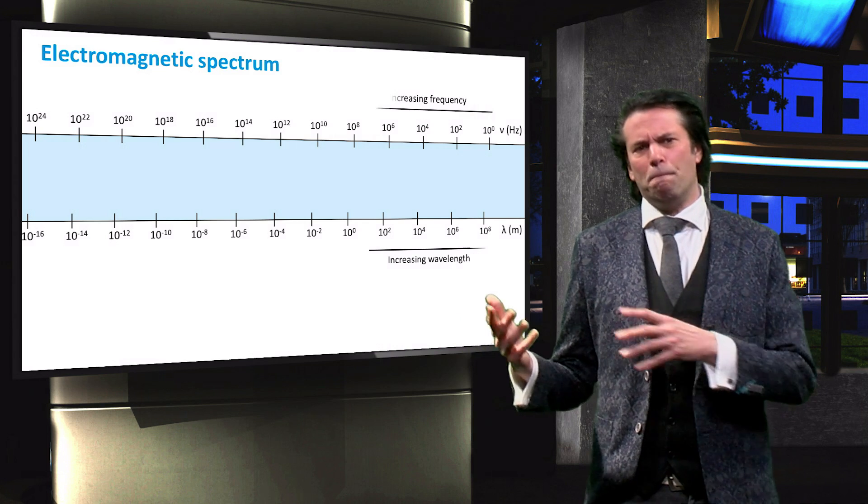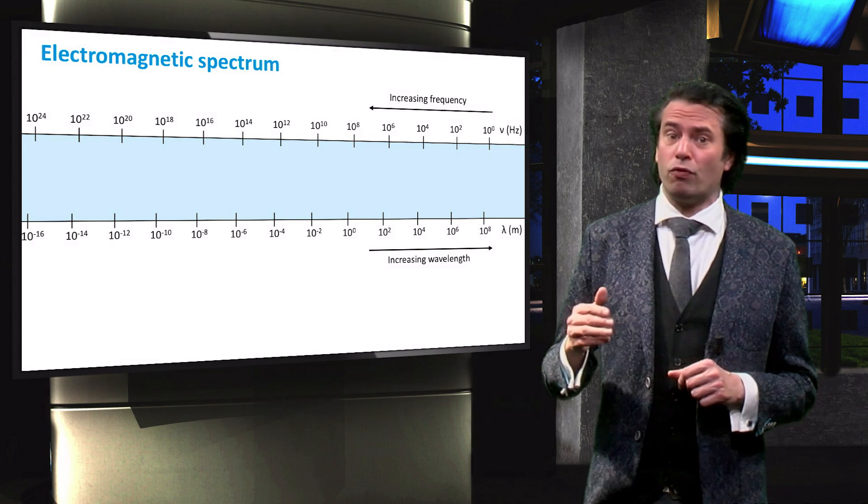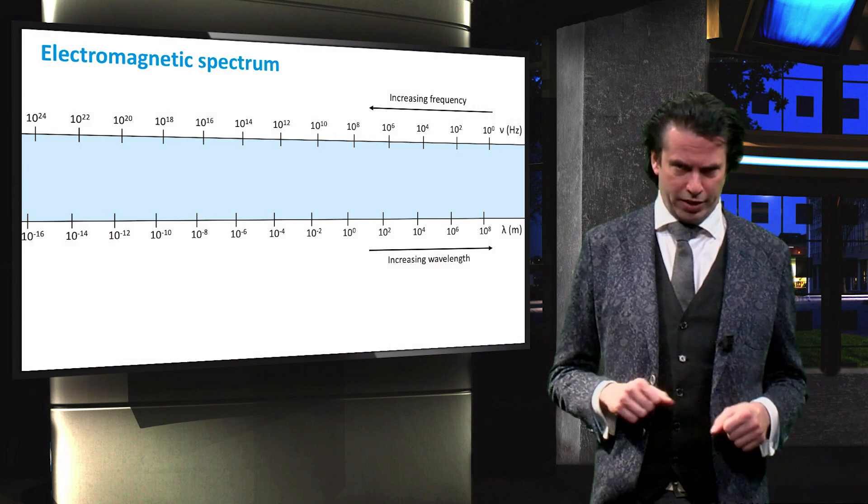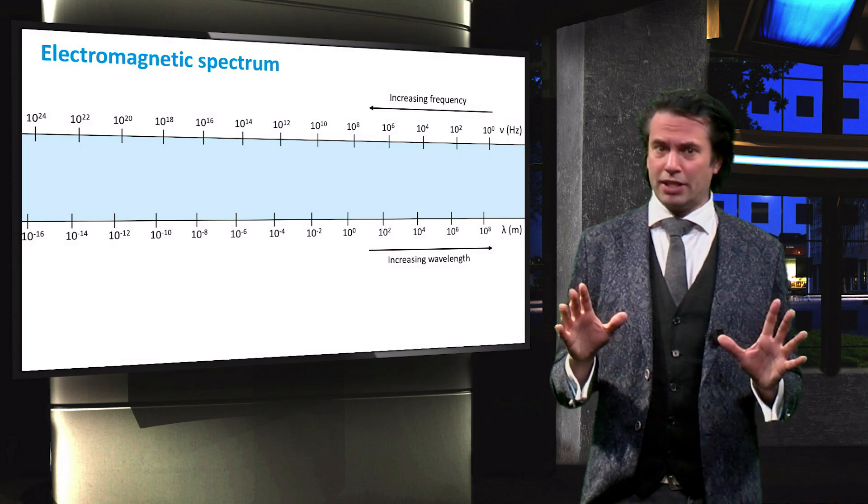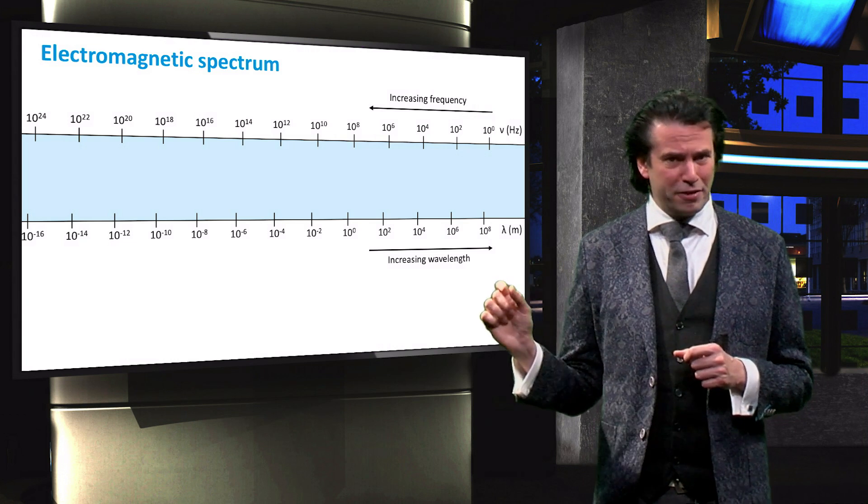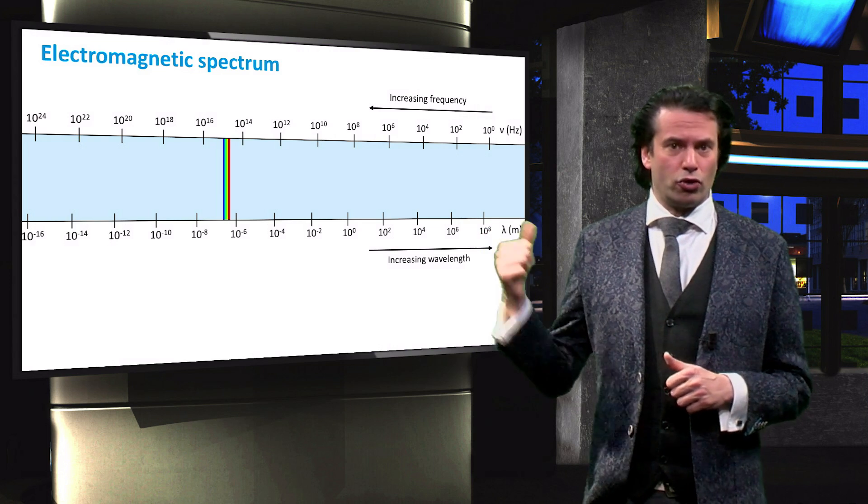Since both wave properties are inversely related, the arrows of increasing wavelength and frequency are pointed in opposite directions. The part of the electromagnetic spectrum that humans can observe with the naked eye is very small in this scale. It is indicated by this colorful line.